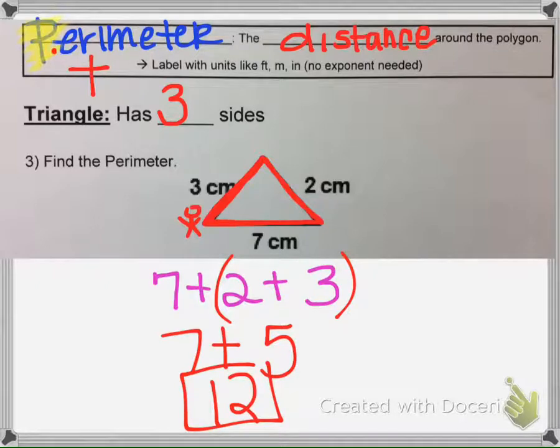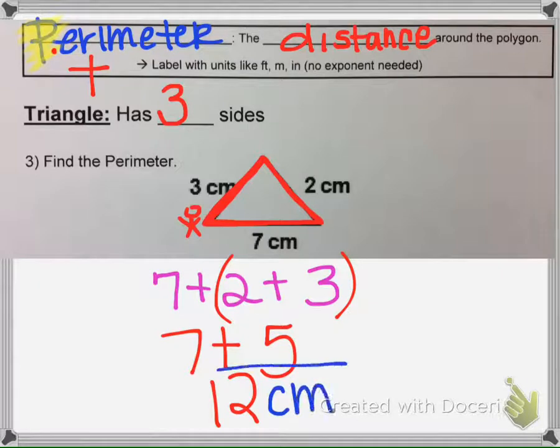Now we have to add a label on. So our label here, since it's perimeter, we're going to label it 12 centimeters. When we label, we keep the label feet meters, it's measured linear. No exponent is needed for perimeter.